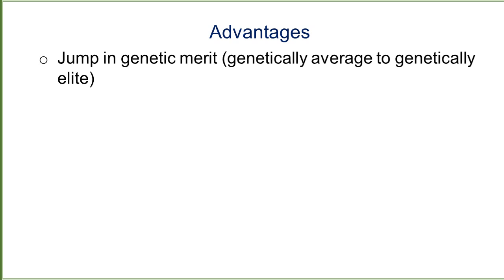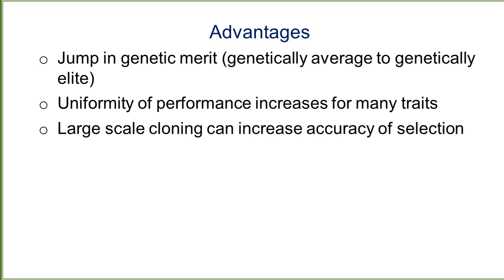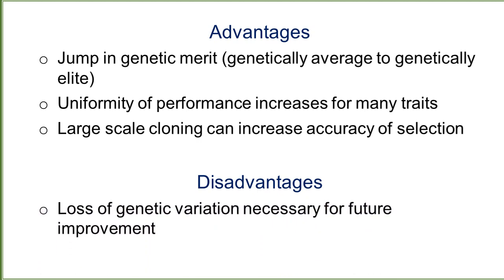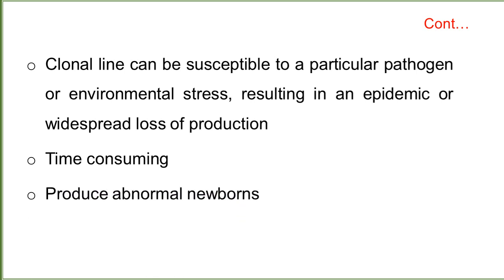The advantages of cloning technology include a jump in genetic merit, moving from genetically average to genetically elite. Uniformity of performance increases for many traits, and large-scale cloning can increase the accuracy of selection. The limitations include loss of genetic variation necessary for future improvement and excessive inbreeding. A clonal line can be susceptible to a particular pathogen or environmental stress, resulting in an epidemic or widespread loss of production. It is also time-consuming, can produce abnormal newborns, and is expensive.